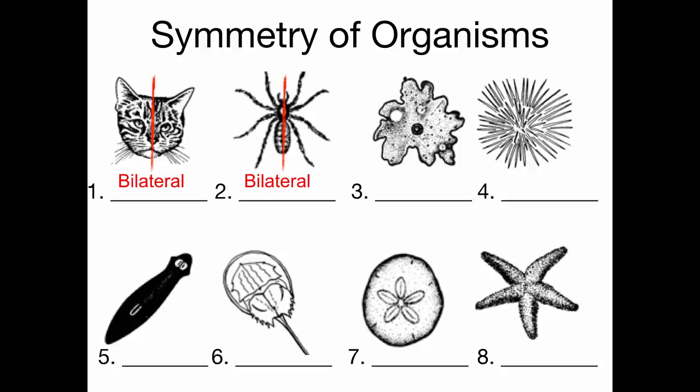What do we call this? It's an amoeba — asymmetry. It doesn't have any pattern.